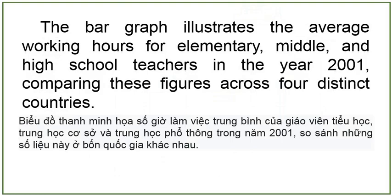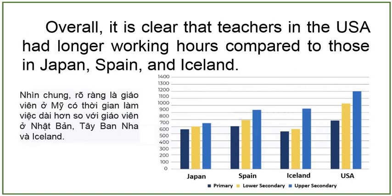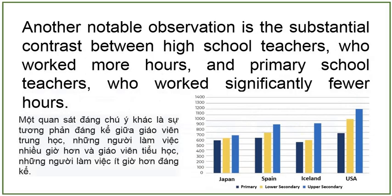The bar graph illustrates the average working hours for elementary, middle, and high school teachers in the year 2001, comparing these figures across four distinct countries. Overall, it is clear that teachers in the USA had longer working hours compared to those in Japan, Spain, and Iceland. Another notable observation is the substantial contrast between high school teachers who worked more hours and primary school teachers who worked significantly fewer hours.